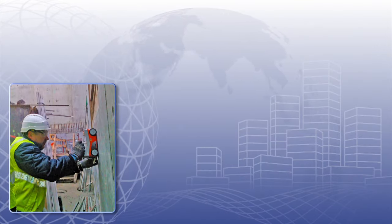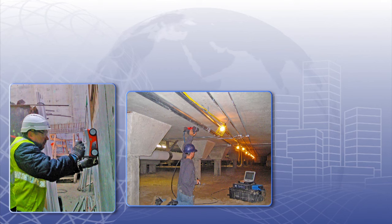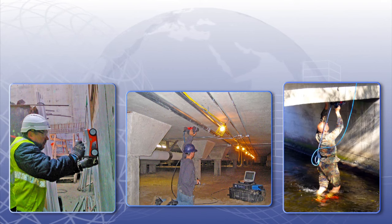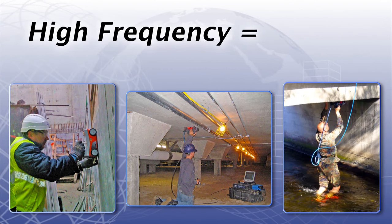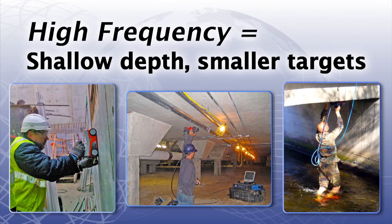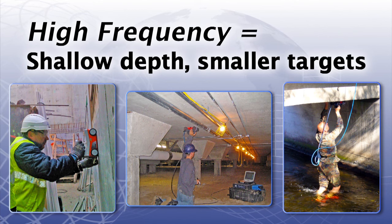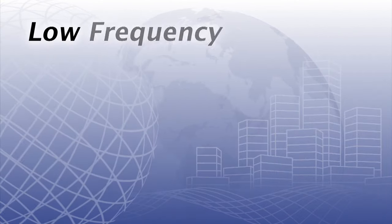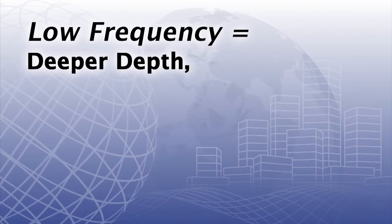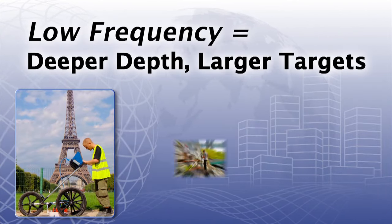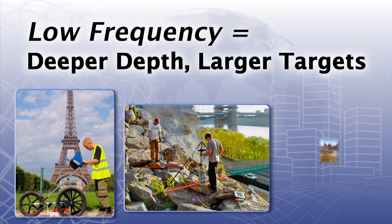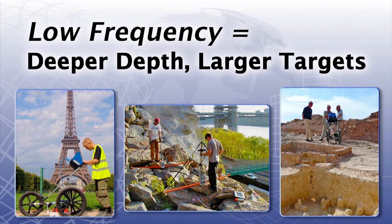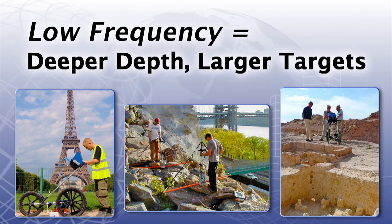Antennas come in various frequencies depending upon your application. High frequencies are for shallow depth and small targets, ideal for concrete applications. Low frequencies are for typically deeper depth and larger targets, such as utility, geological, and archaeological applications.